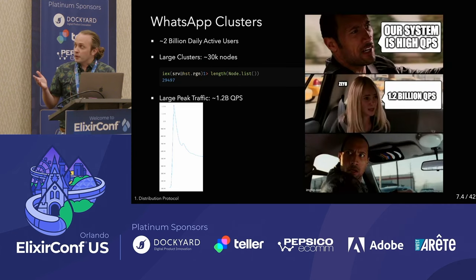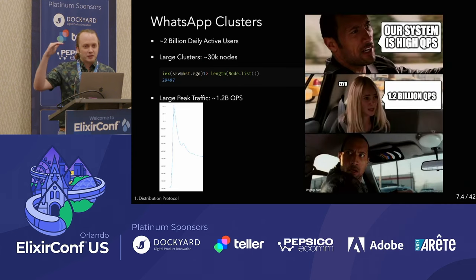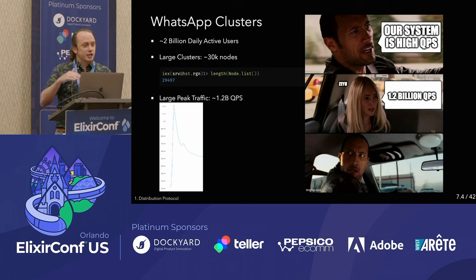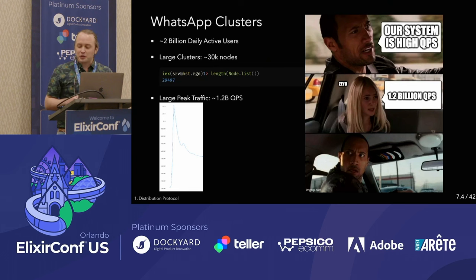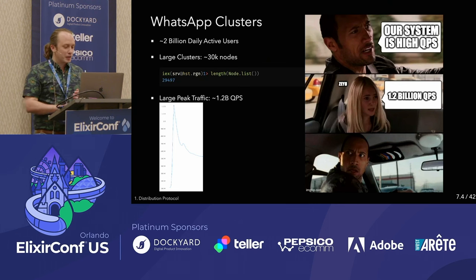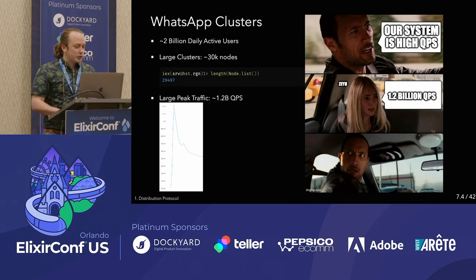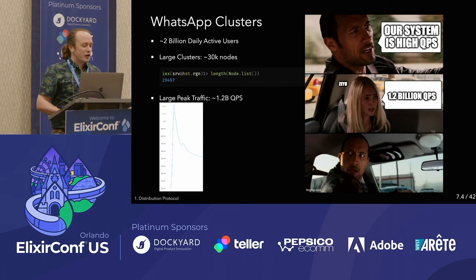One of my colleagues, Joyu, made a post about changes they'd made to overload protection, pointing out this giant spike and saying everything worked. One of my other colleagues made a meme that 1.2 billion QPS is not normal traffic you see every day.